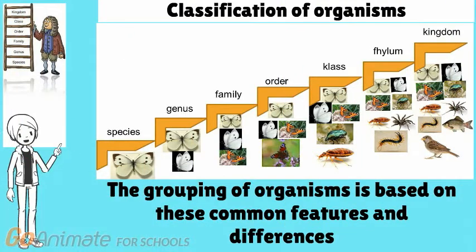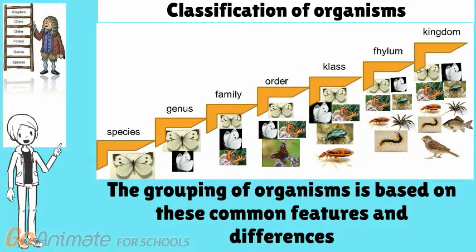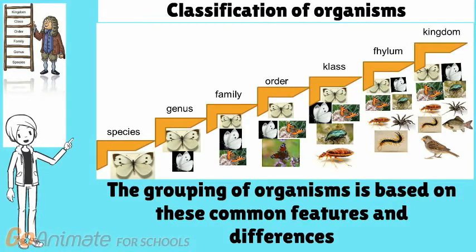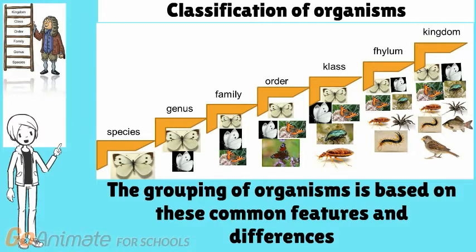The classification system of Linnaeus for the animal and plant kingdoms is still used today. Grouping is made up of units called taxon. The grouping of organisms is based on their common features and differences, and each subsequent taxon of species has a larger volume than the previous one.